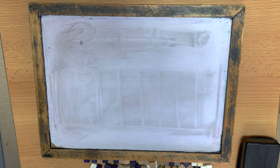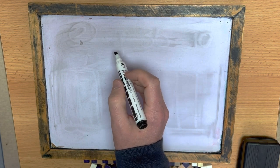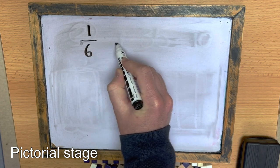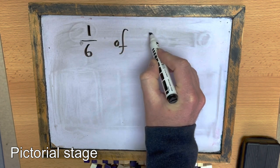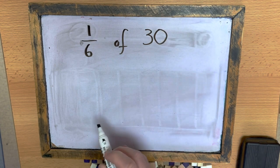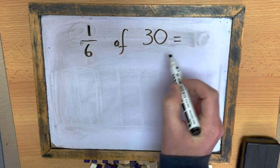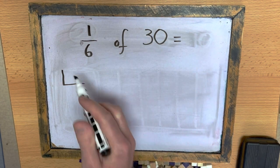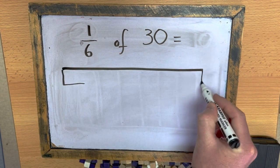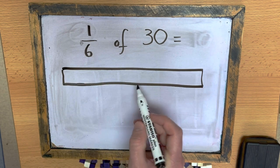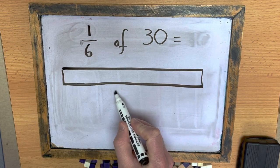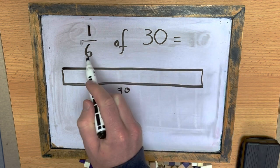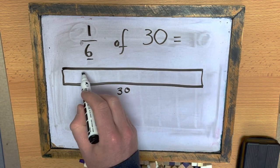Once you've mastered that, you'll then be ready to move on to using pictures to help you. So, one-sixth of 30 equals. Instead of using these counters, I can use pictures to help me instead. So, if this bar here is worth 30, so if all of this is worth 30, I need to split it into six pieces.